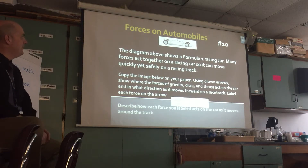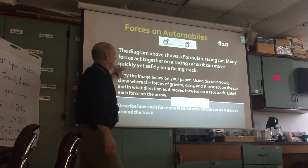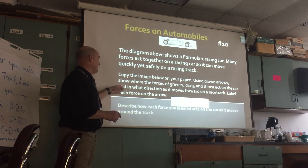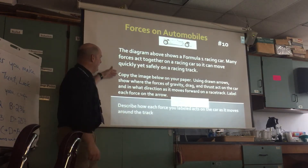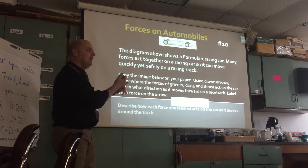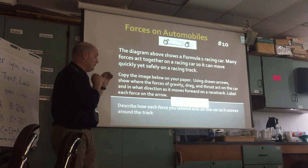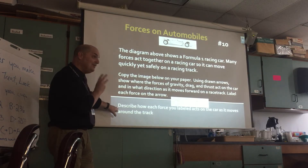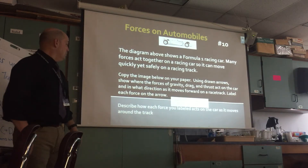This was an open response question several years ago. They gave a picture of a Formula One race car and said: using drawn arrows, show where the forces of gravity, drag, and thrust act on the car as it moves forward on the racetrack, labeling each force. Then describe how each of these three forces acts on the car as it moves around the track.